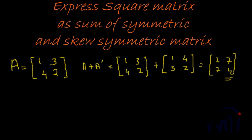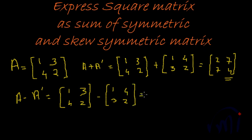So, this is a symmetric matrix. And then A minus A dash would be equal to 1, 3, 4 and 2 which is A minus 1, 2, flipping 3 and 4. This will be equal to 0, 1 minus 1 is 0, 2 minus 2 is 0, and 4 minus 3 is 1 and 3 minus 4 is minus 1. And what do we have here? We have a skew symmetric matrix.